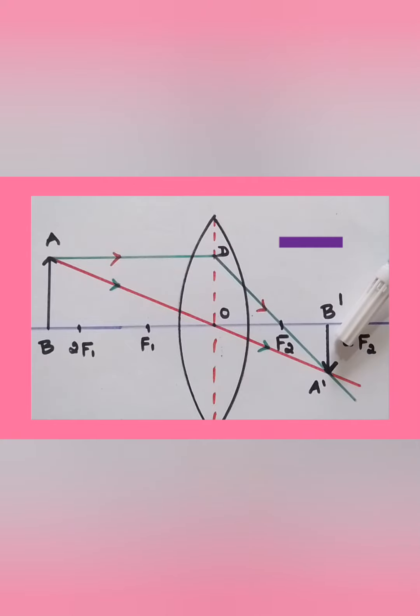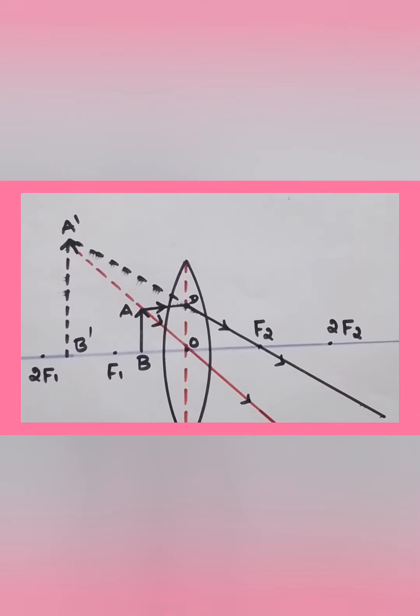In case of a convex lens we also get erect and upright image. As we have already discussed, if the object in case of a convex lens is between the lens and the focus point, then the image formed is behind the object and the image is erect, upright. In this case we take linear magnification as positive.